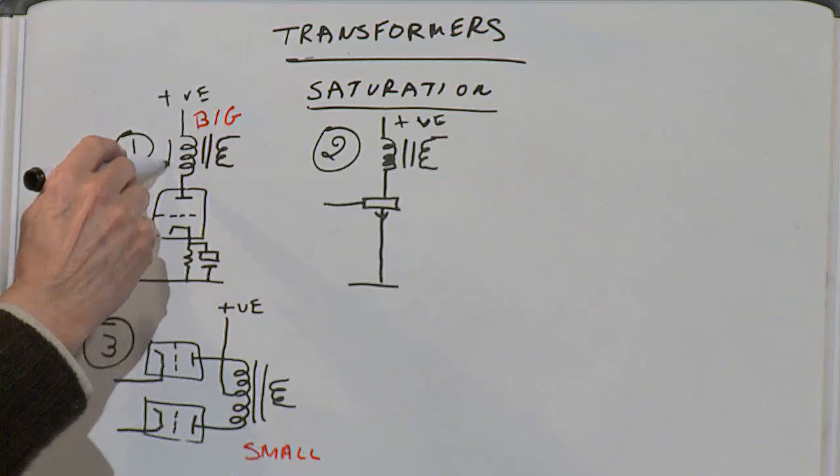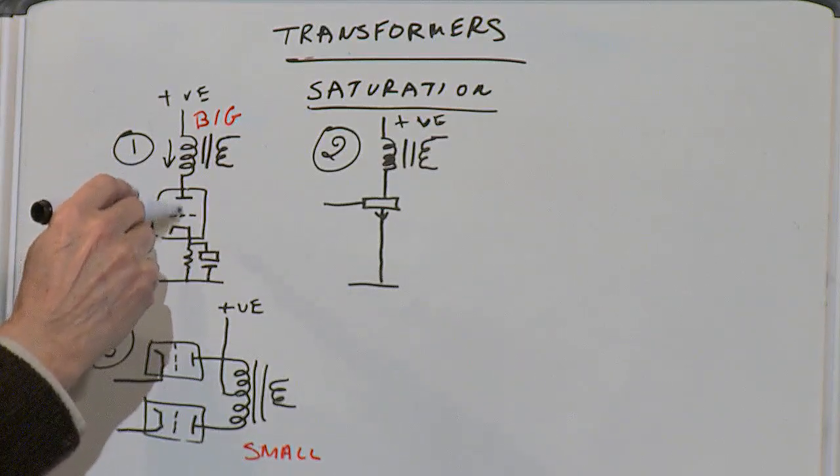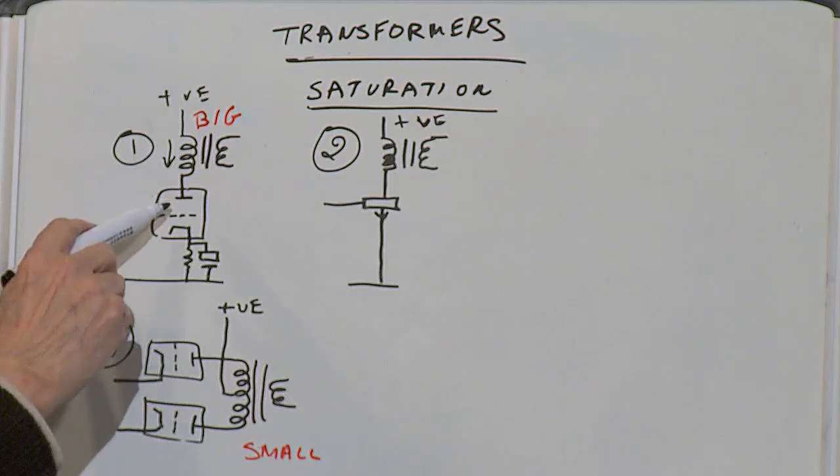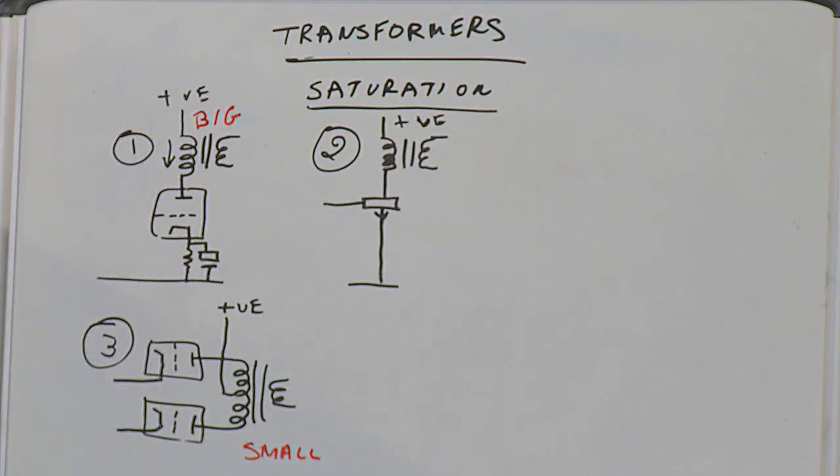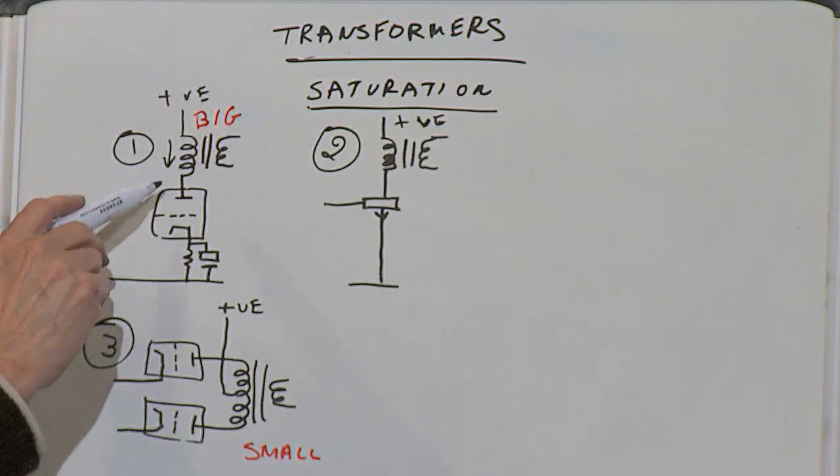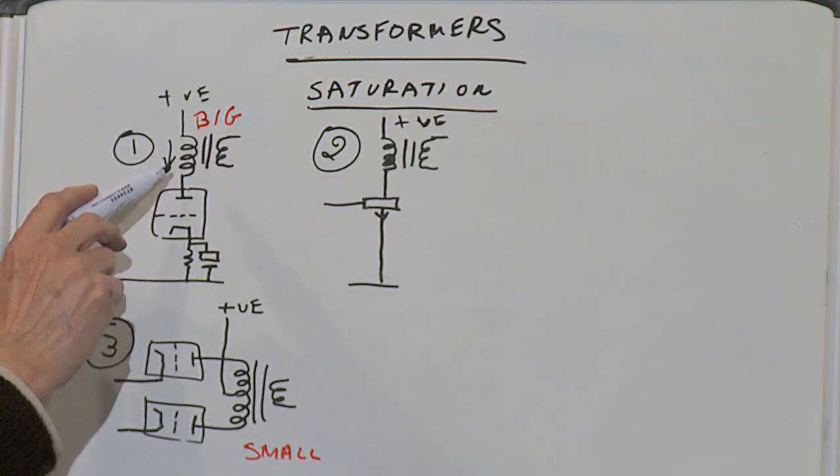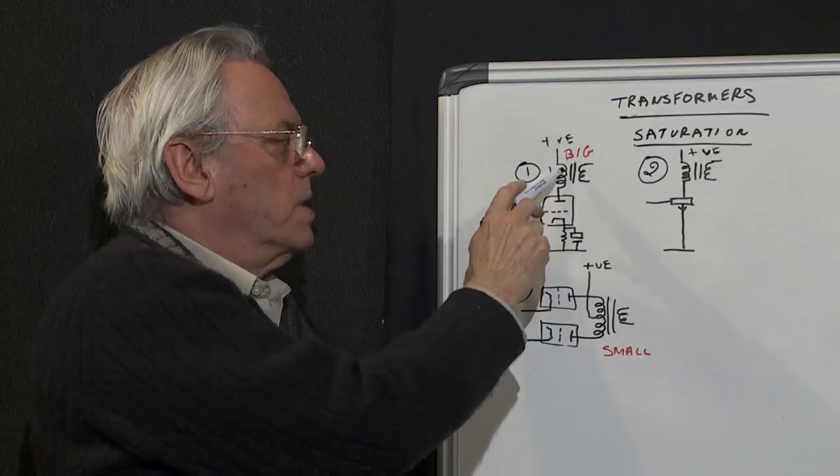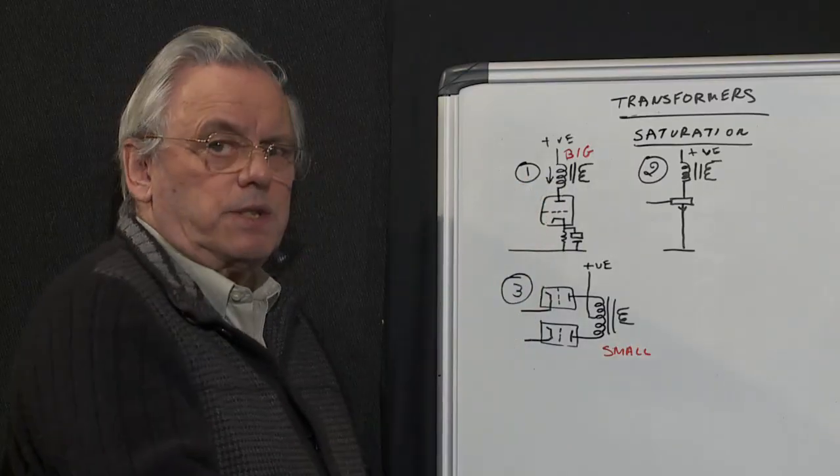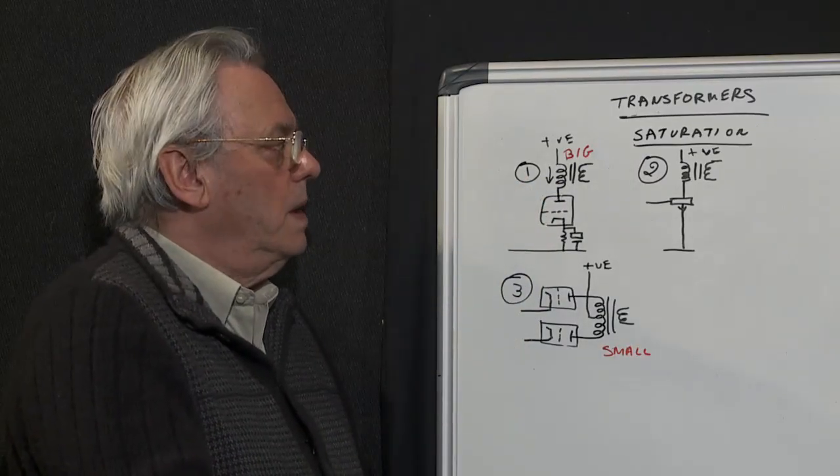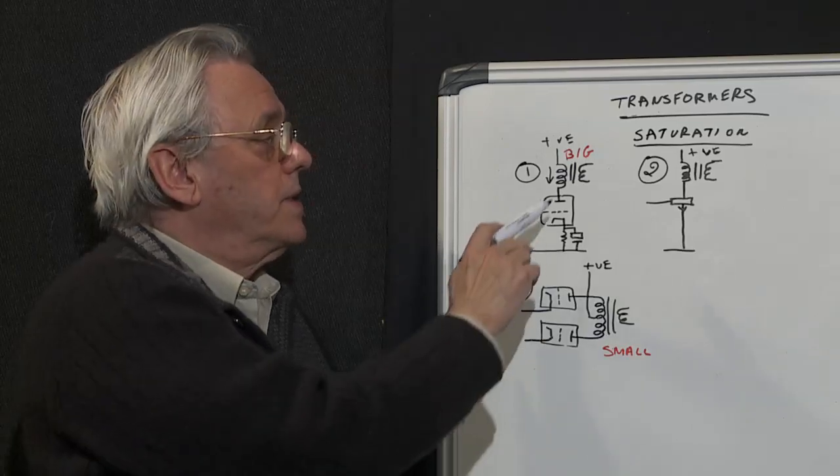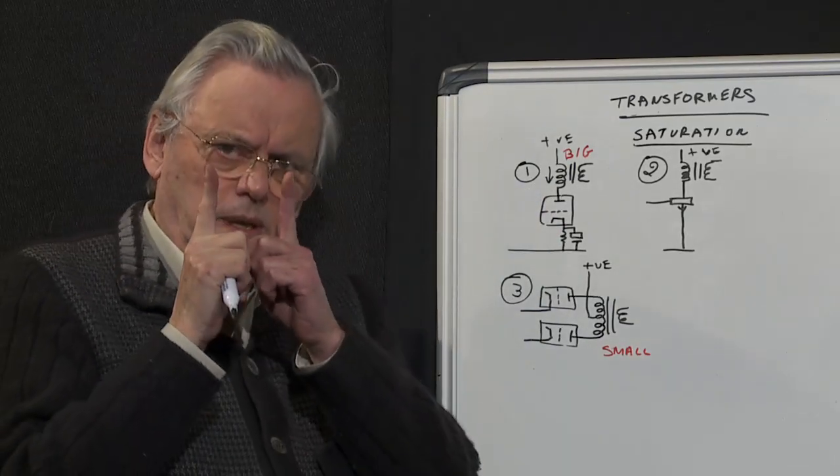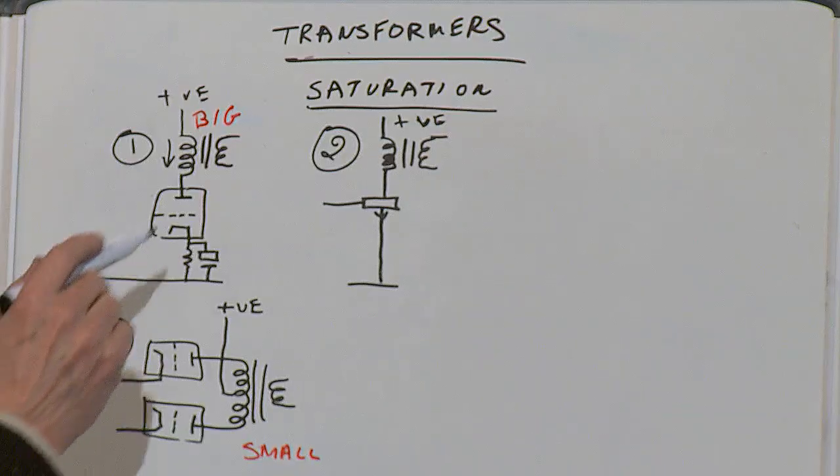Also notice that DC for the anode flows through the primary. If that valve is taking a lot of current, which you probably will do if you want much power out, then there's going to be considerable DC within that primary which can cause the laminations to saturate. The way around this is either to use a very big transformer—I'm talking one about that big—or an air gap in there with the cigarette paper.